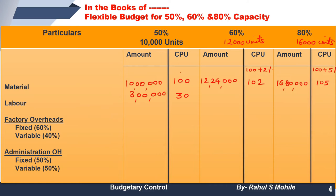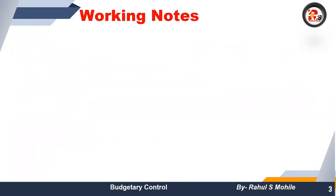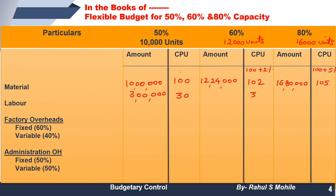Now let's move towards labor. If there is no specific information about labor adjustments, we will take the same labor per unit — 30 rupees. So for 60% capacity: 30 multiplied by 12,000 gives 3,60,000. For 80% capacity: 30 multiplied by 16,000 gives 4,80,000. Material and labor are now calculated.